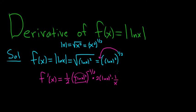So to recap: whenever you have a function with an absolute value, you definitely want to use this formula for finding the derivative. Rewrite the absolute value of whatever as the square root of whatever squared, then rewrite the square root to the one half power. Take the derivative and use the chain rule as we did here.